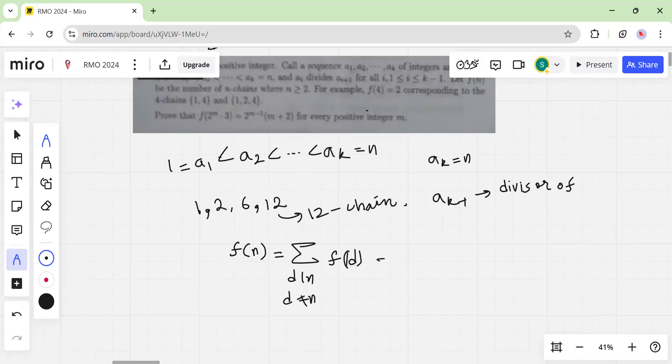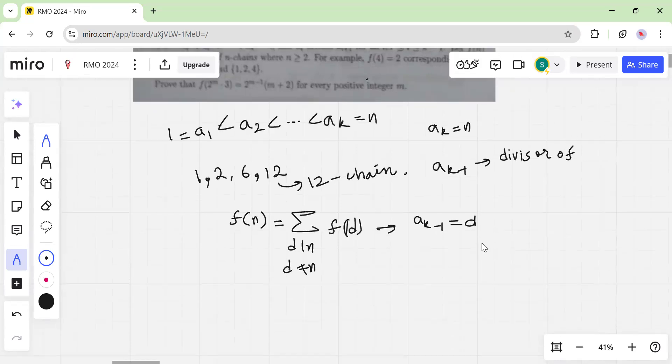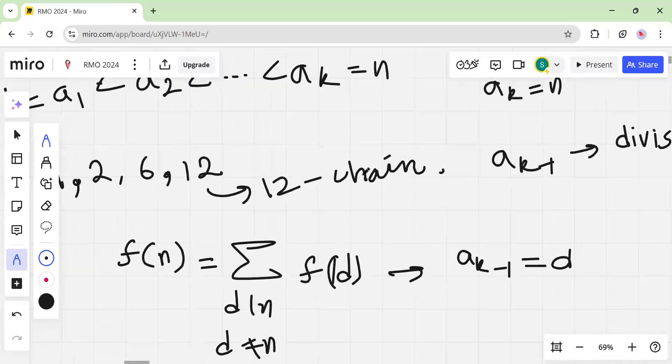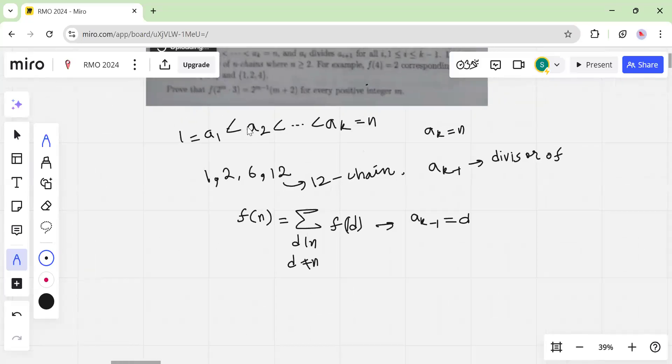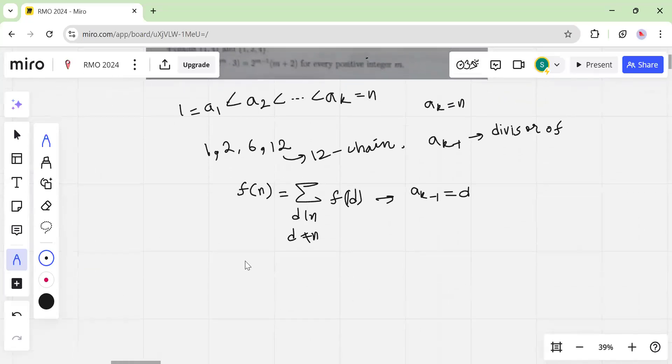So this is just, this thing stands for when ak minus 1 is equal to d. And over here, we want to evaluate this particular thing, this value.